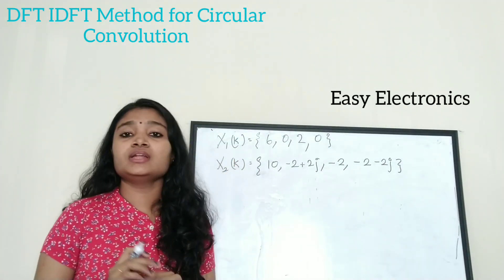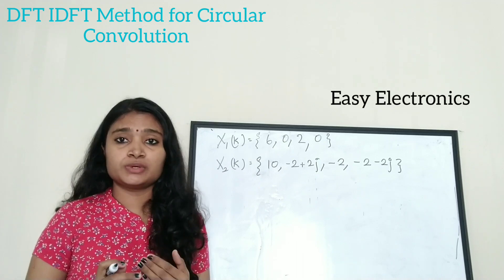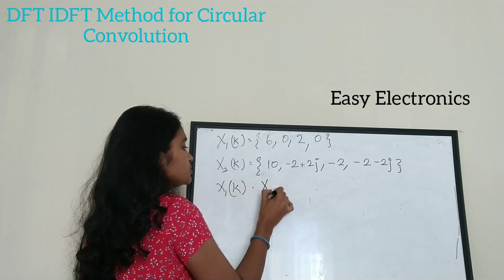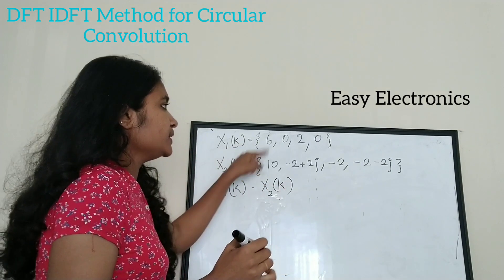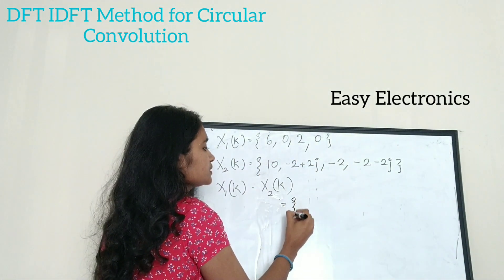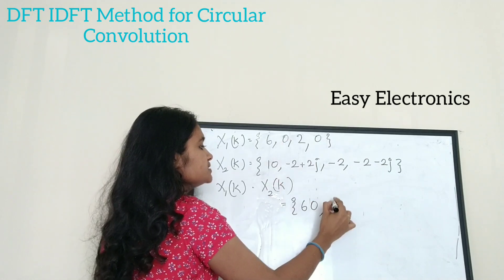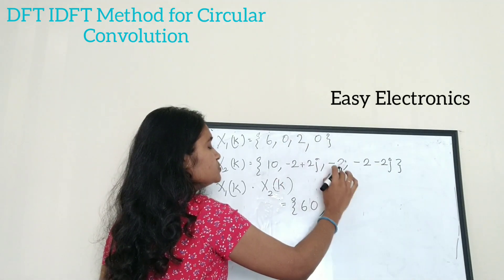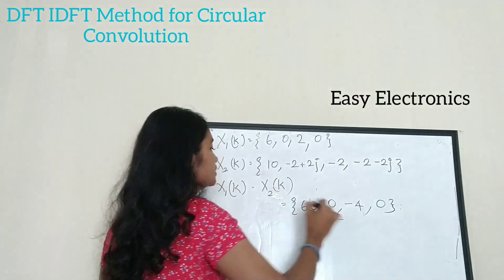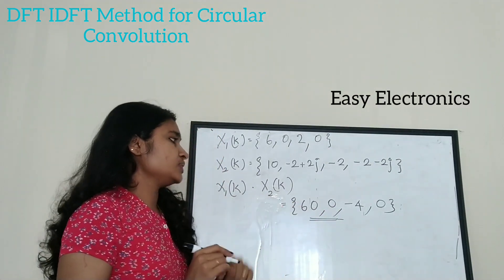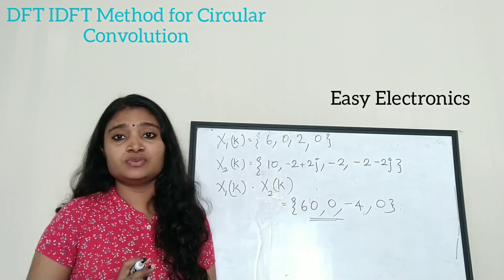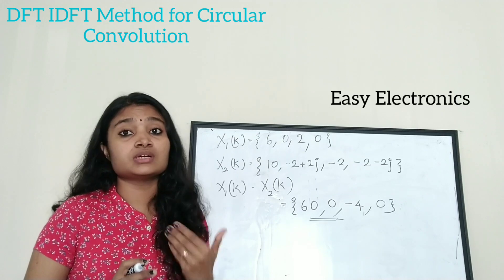Now we have X1(k) and X2(k). Taking the dot product X1(k) · X2(k) by multiplying corresponding terms: 6×10 = 60, 0×(−2+2j) = 0, 2×(−2) = −4, and 0×(−2−2j) = 0. So X1(k) · X2(k) = [60, 0, −4, 0]. We now take the IDFT of this vector to get the circular convolution result.